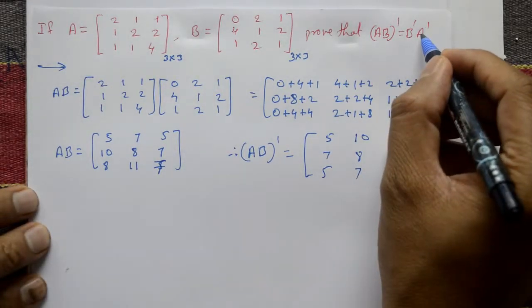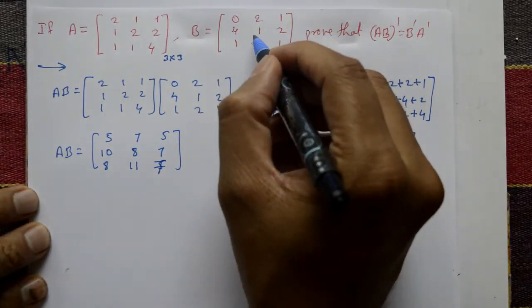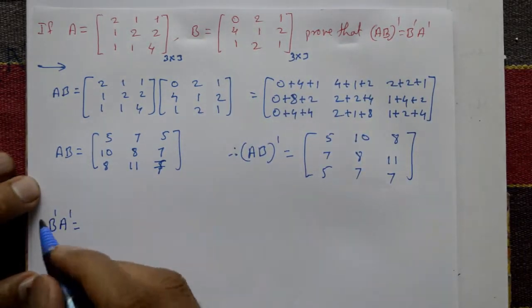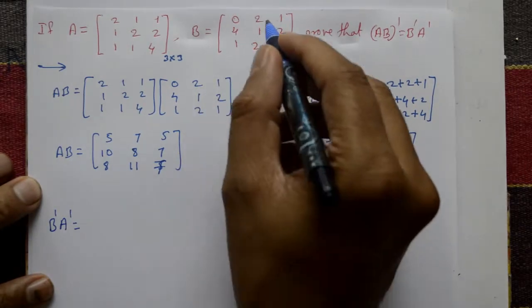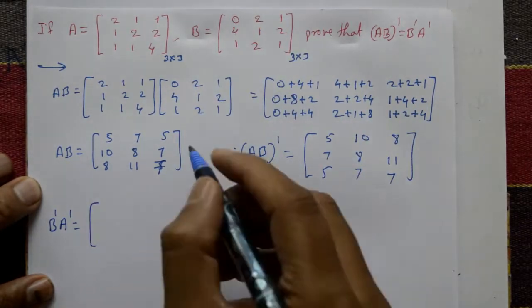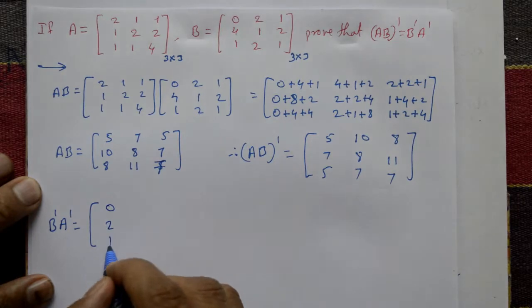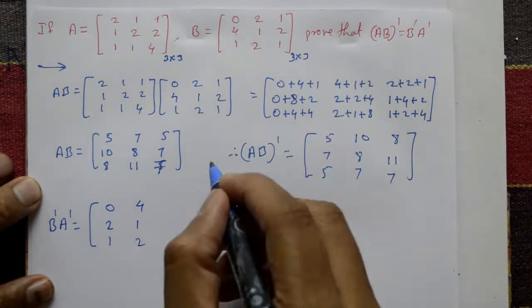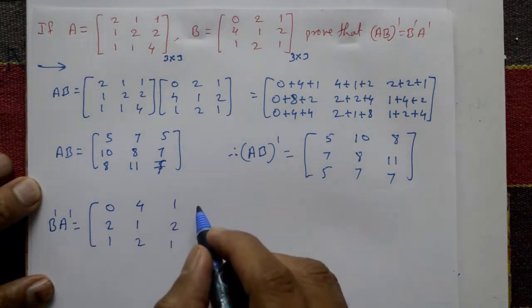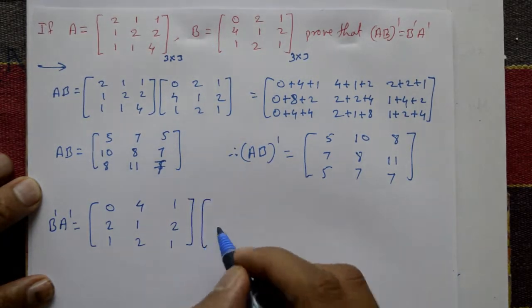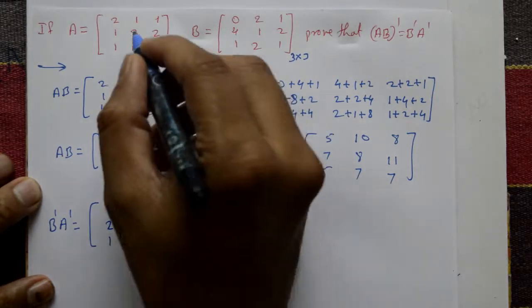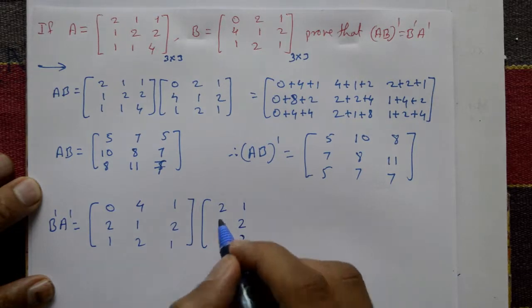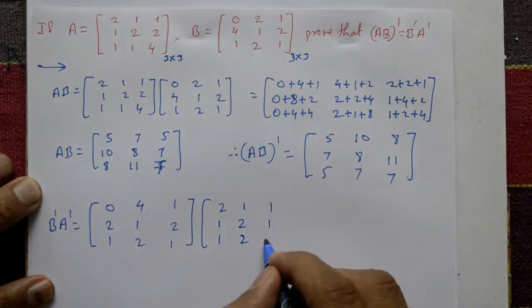Next compute B dash and A dash. B dash is the transpose of matrix B. Row into column: first row becomes [0, 2, 1], second [4, 1, 2], third [1, 2, 1]. Now A dash, transpose of matrix A — row becomes column: first row [2, 1, 1], second [1, 2, 2], third [1, 1, 4].